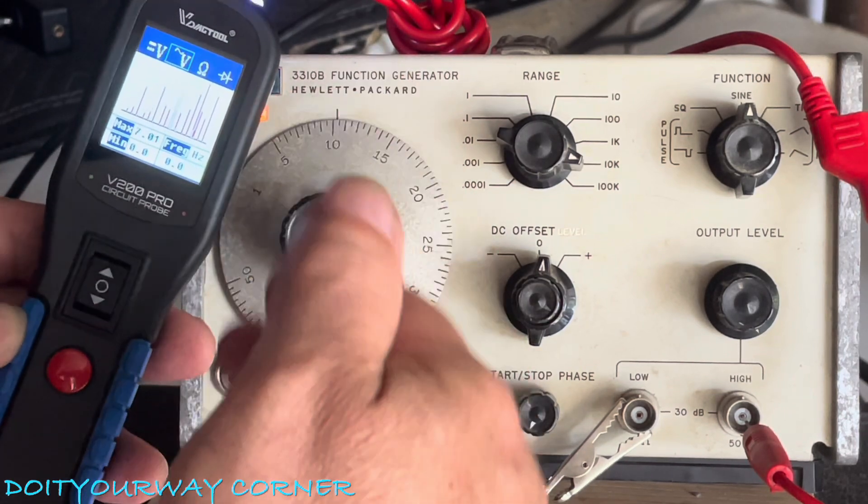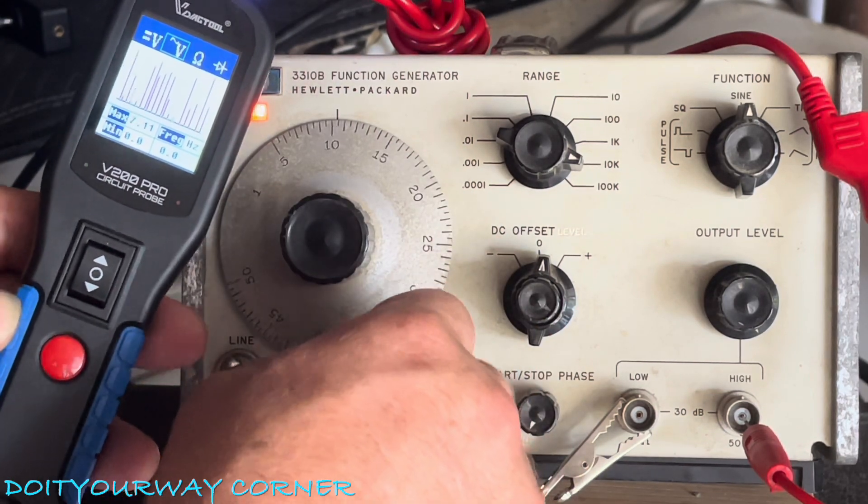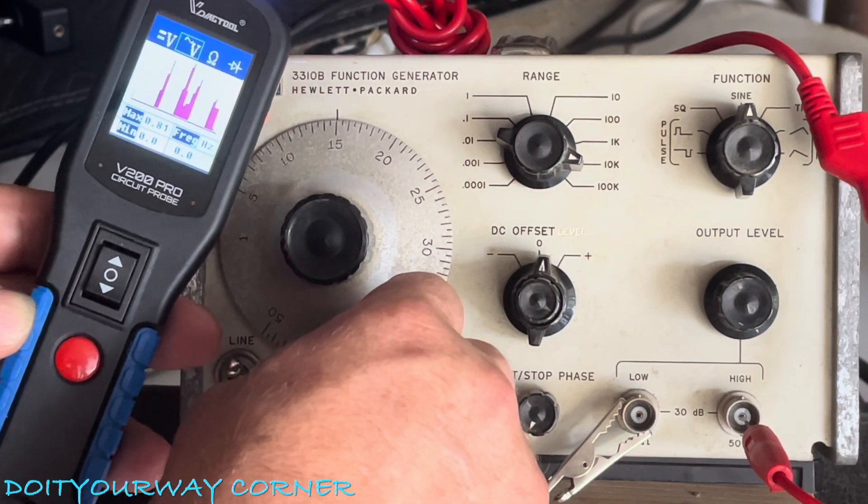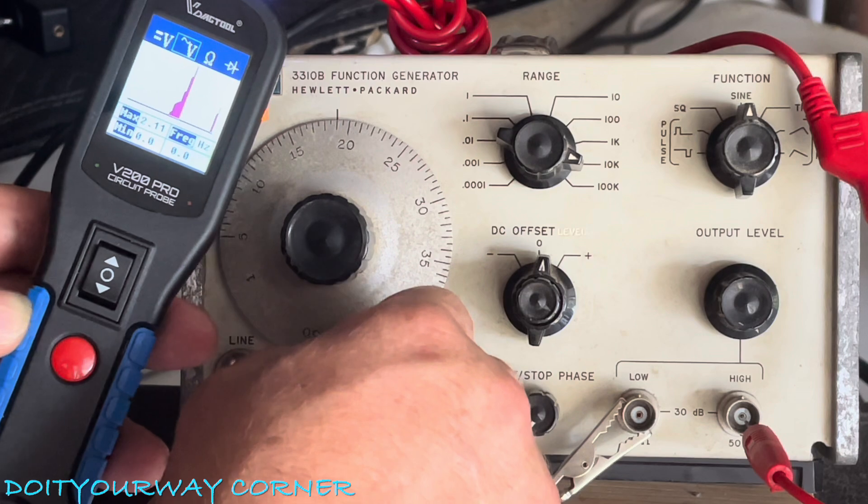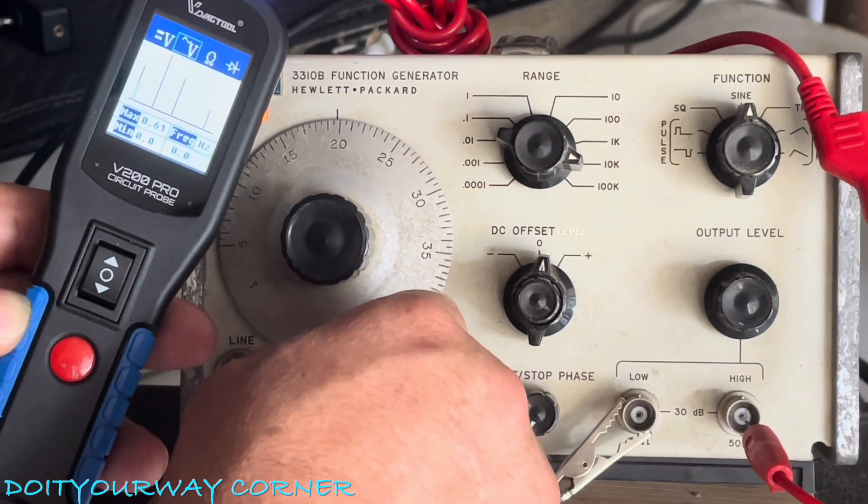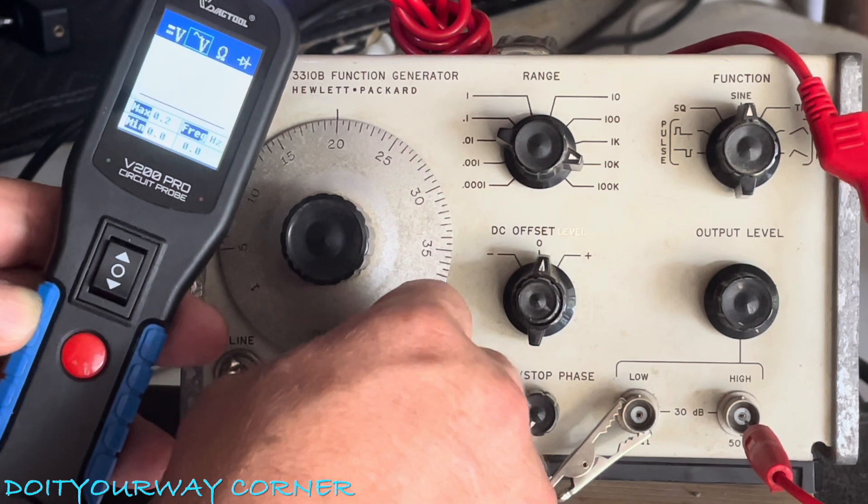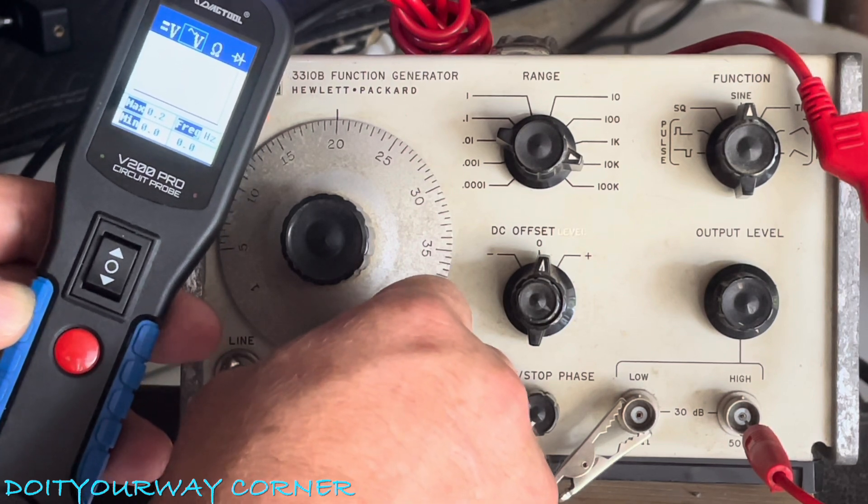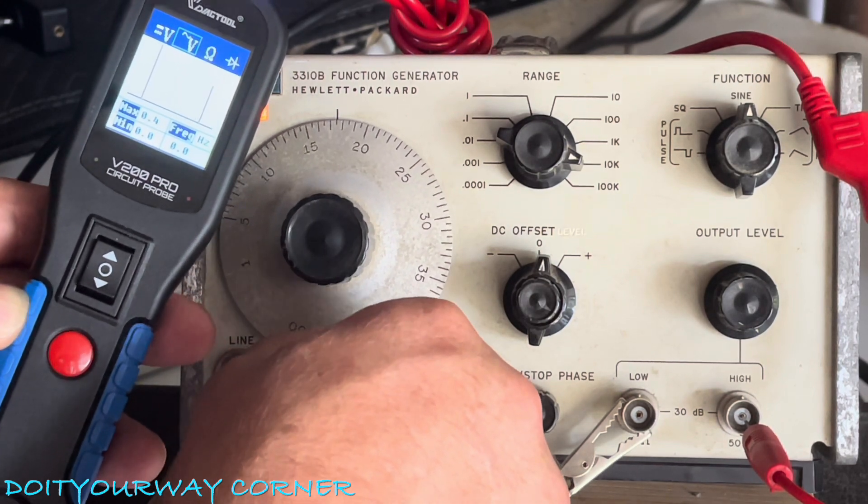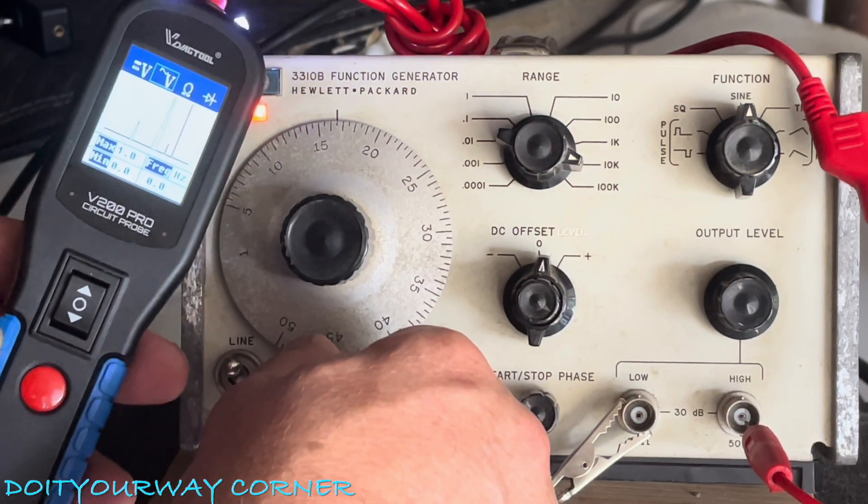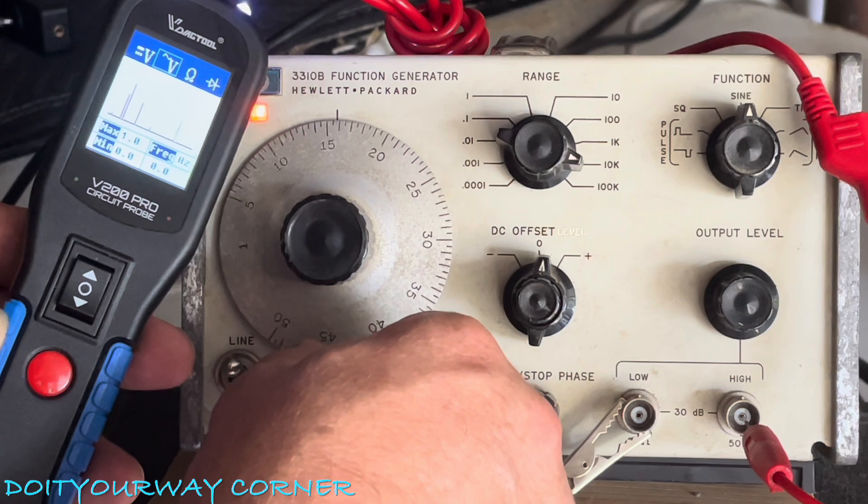So this might tell you that you're seeing some signal from your crankshaft, injector, camshaft sensor. It's not going to measure the frequency. Yeah, we're losing it right around 200k. Yeah. So for those of you who are looking for the resolution of this thing, it's somewhere in the neighborhood of 150k.